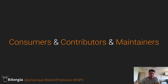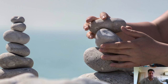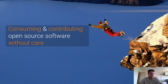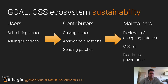Coming back to the topic I want to highlight today: the balance between consumers, contributors, and maintainers. There is a discussion happening because many organizations take from open source without contributing back. From my experience, consuming and contributing open source software without care — just using it because it's free, or releasing software without addressing vulnerabilities or licensing problems — is very easy to do but problematic. OSPOs and the people working in them have the knowledge, capability, and tools to manage all of this in a proper way.